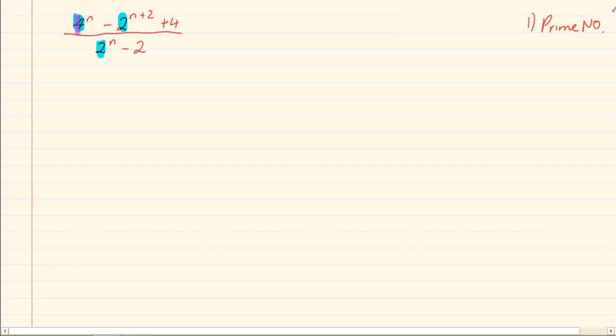So I wouldn't bother about the 4 or the 2 because they are constants that don't have powers with them. But the 4, 4 to the power of n, we are going to try and break that down. Now when we break it down we got 2 to the power of 2 in brackets to the power of n minus 2 to the power of n plus 2 plus 4, all over 2 to the power of n minus 2.